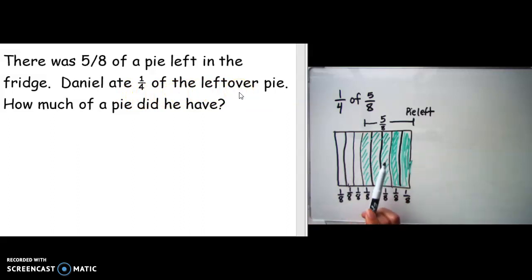Going back to the problem, it also said that Daniel ate one-fourth of the leftover pie. So here is the leftover pie. I'm going to divide this by one-fourth, so I'm going to make even smaller portions. I'm going to do it horizontally and I need to make fourths. This is one half and one half. I'm going to divide it once more, each section once more.